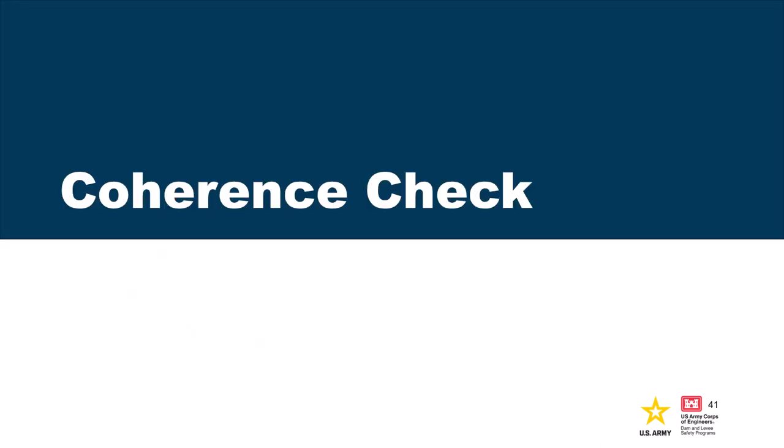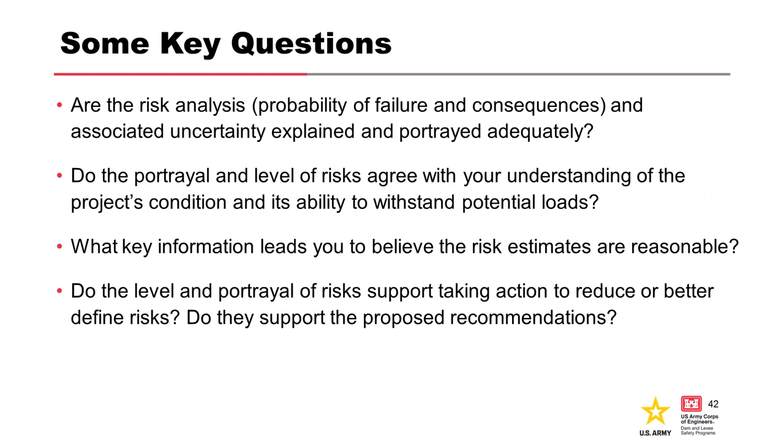We need to make sure the risk estimates and recommendations are consistent with the data we have. Key questions asked of independent reviewers include: Are the risk analysis and associated uncertainty explained and portrayed adequately? Does the portrayal of risks agree with your understanding of the project's condition? What key information leads you to believe the risk estimates are reasonable? Do the risks support taking action or better defining risks, and do they support the proposed recommendations? Answering these questions honestly is a good way for teams to check their work.